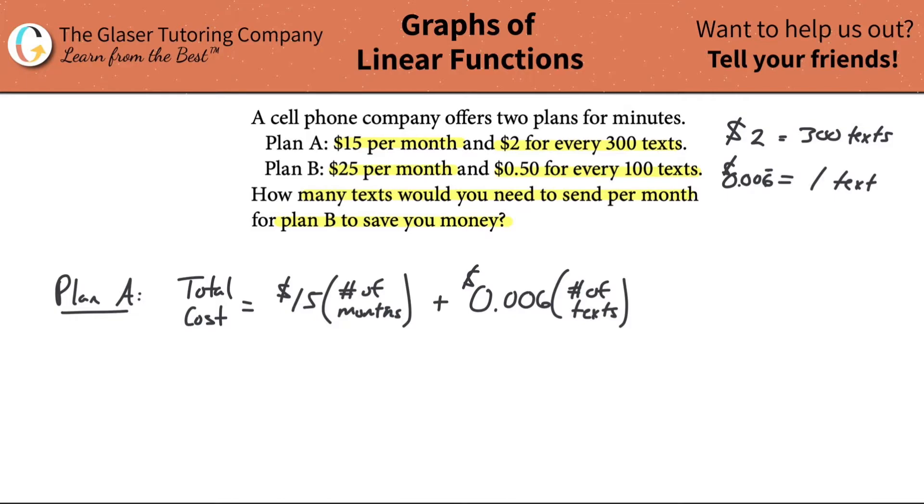Let's run through Plan B now. I'm going to put Plan B in blue. We're going to do the same thing. Total cost will equal $25 times the number of months, plus then it's going to be 50 cents for every 100 texts. But again, I want it per text. If it costs 50 cents for every 100 texts, how much does it cost per single text? Take the 50 cents and divide it by 100. That works out to 0.005, about half a cent. So this would be 0.005 times the number of texts.